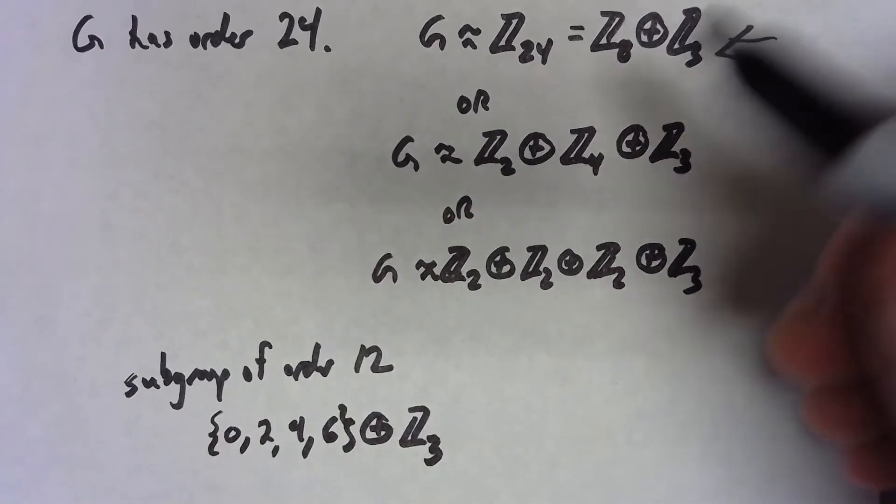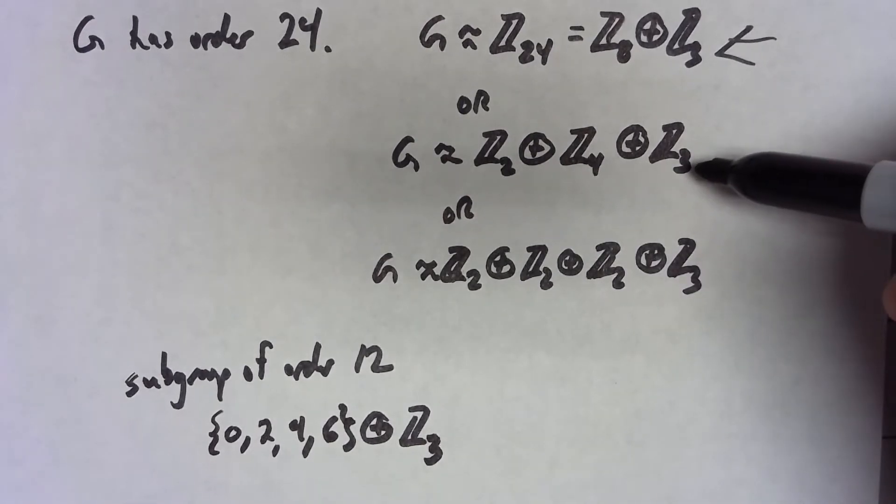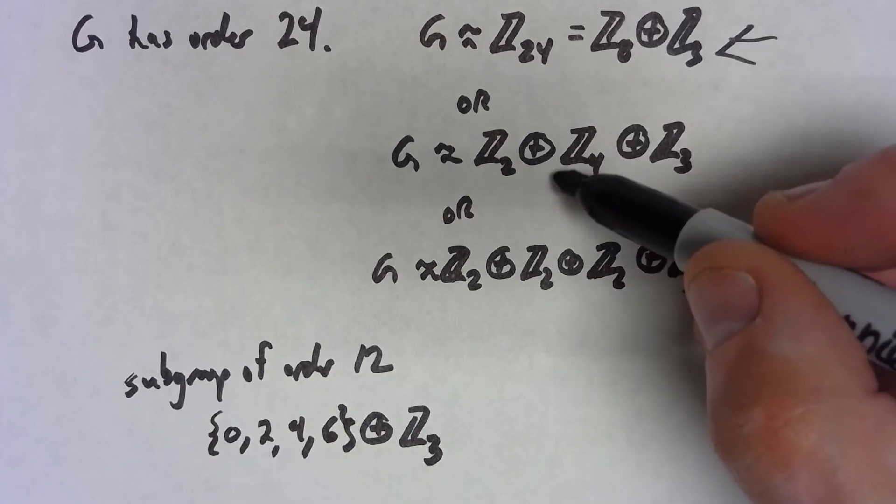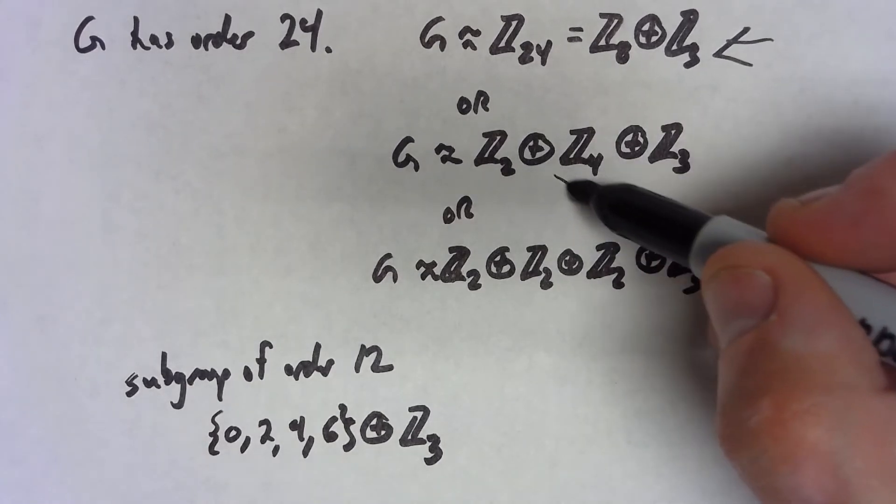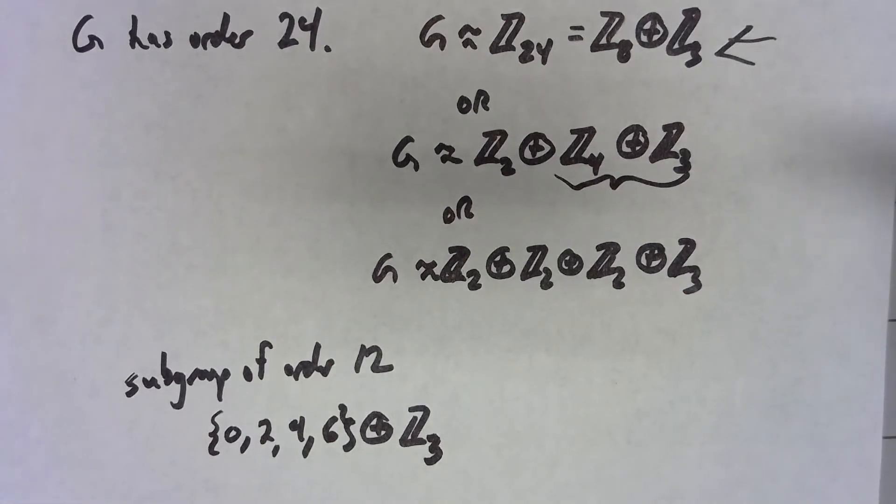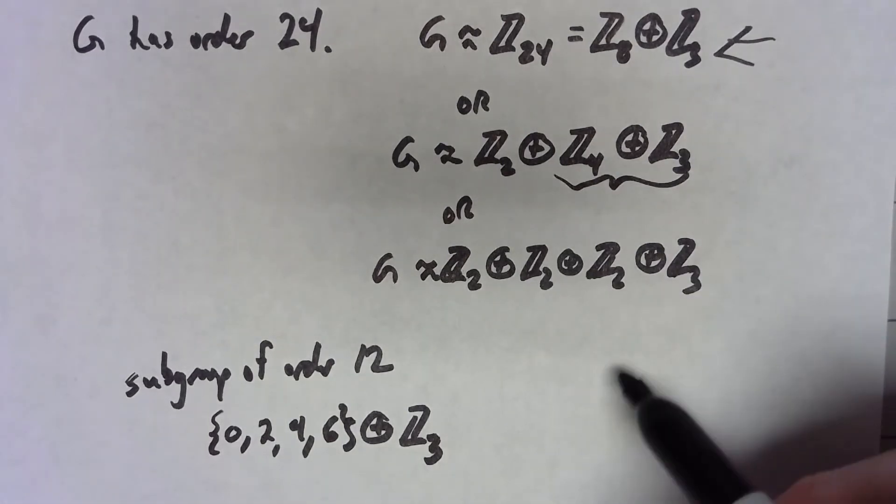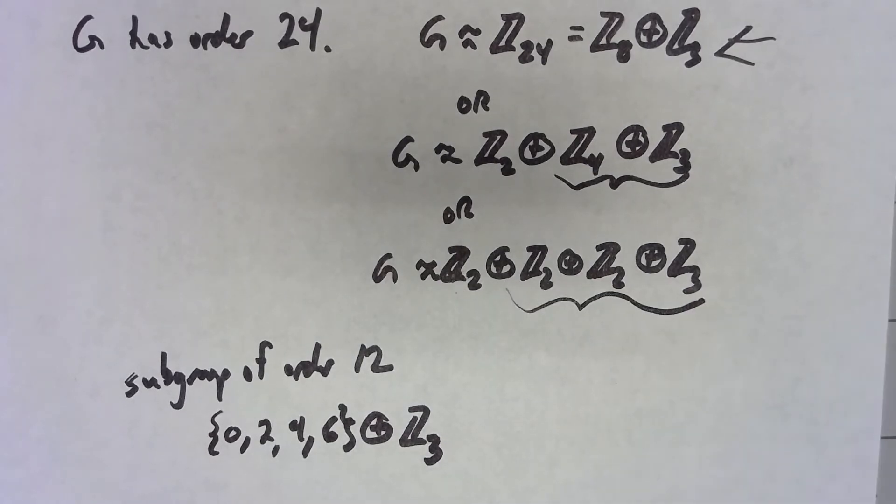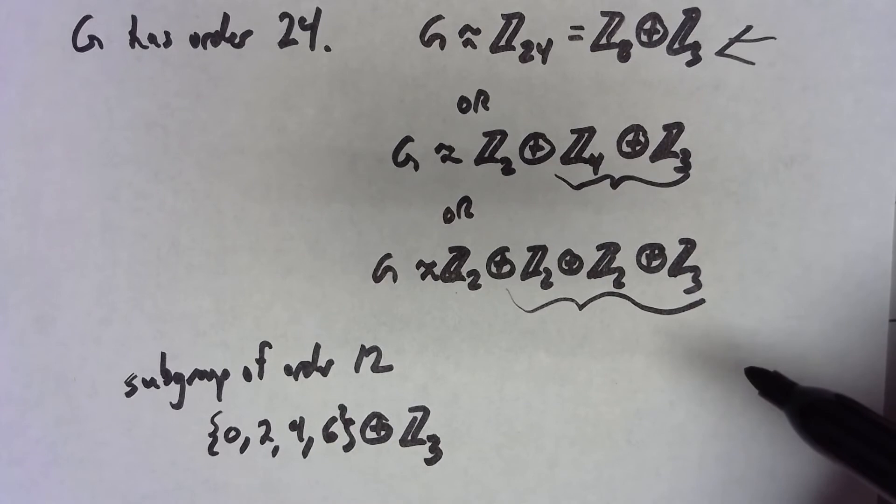If I look at Z2 direct product Z4 direct product Z3, I can take this part of it, let the first component be 0, and we've got it. Here, same kind of thing: if I let my first component be 0 and look at all possibilities for that, that's a subgroup of order 12.